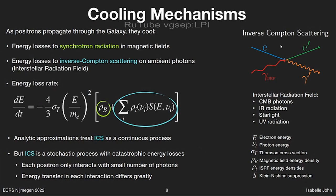There are two cooling mechanisms relevant here. One is synchrotron radiation: positrons are charged particles and they interact with magnetic fields in the galaxy, losing energy. The other is inverse Compton scattering, where a high-energy positron interacts with a photon from the interstellar radiation field — for example a CMB photon or a starlight photon — and gives off some energy to the photon. The energy loss rate is given by an equation with a term for synchrotron and one for inverse Compton scattering. Importantly, this equation treats energy losses as a continuous process.